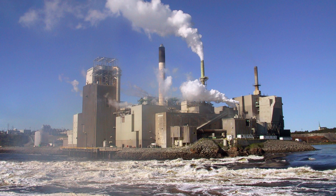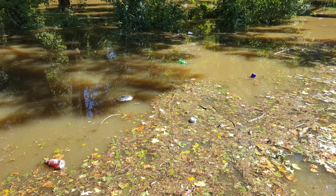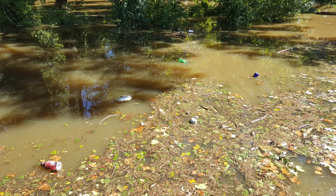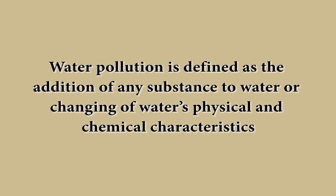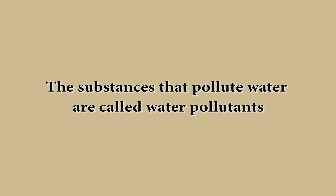First of all we should know how water is getting polluted. When harmful substances such as sewage, toxic chemicals from industries and debris get mixed with water, the water becomes polluted. So water pollution is defined as addition of any substance to water or changing of water's physical and chemical characteristics. The substances that pollute water are called water pollutants.